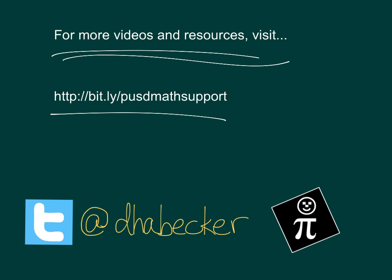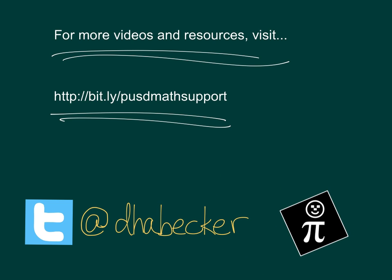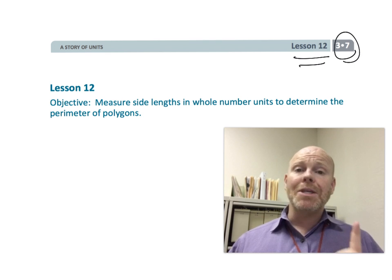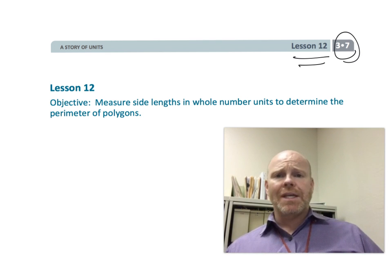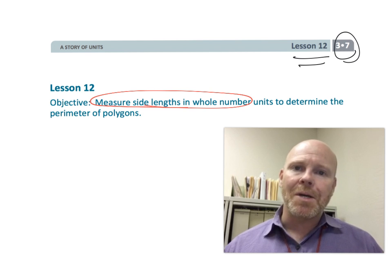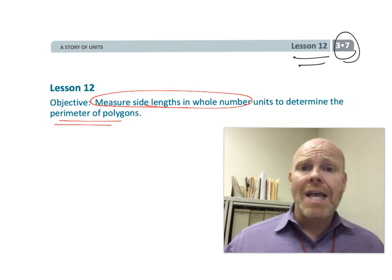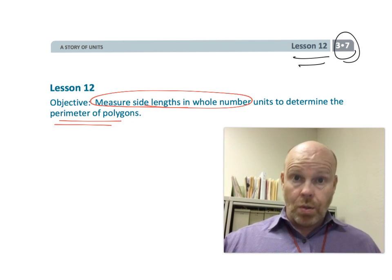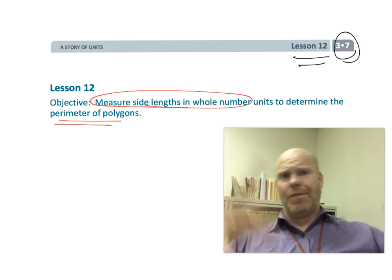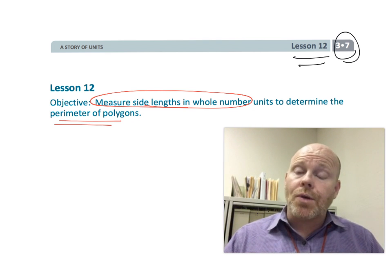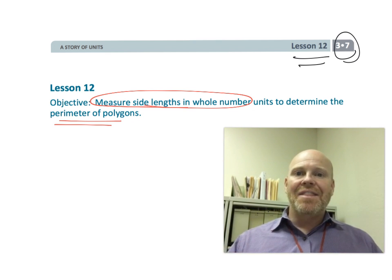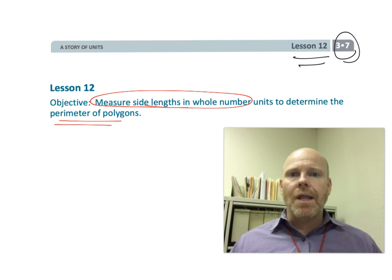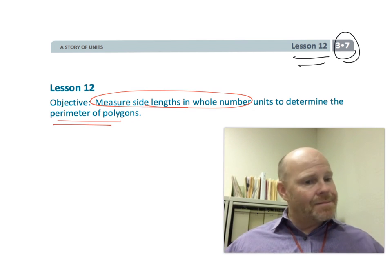This is third grade module 7 lesson 12. In this lesson, students are going to use rulers to measure the lengths of particular shapes and then find the perimeter. What's really cool about this is that perimeter in this lesson is going to be meaningful because students are actually going to use rulers and measure the sides — a physical, kinesthetic way for students to internalize what perimeter is.